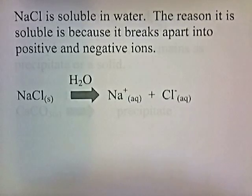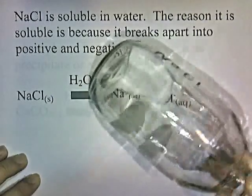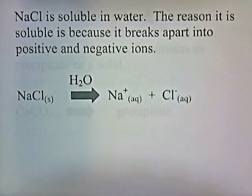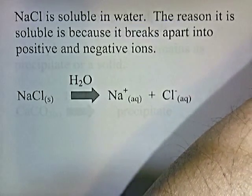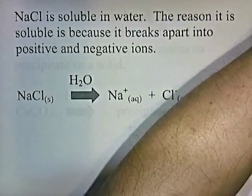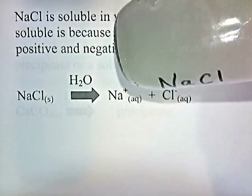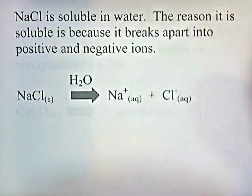NaCl is soluble in water, and the reason it's soluble is because it breaks apart into positive and negative ions. If you take salt and put it in water, it breaks apart into sodium ion and chlorine ion. I have some salt right here — you can see the white powder. I'm going to pour some water into it, shake it, and then set it aside. Eventually it'll turn clear and all the salt will become dissolved.